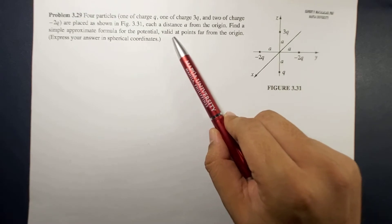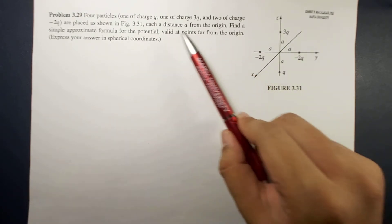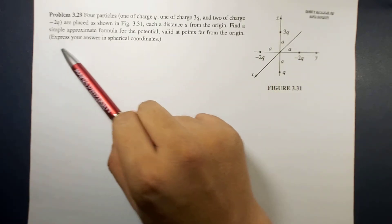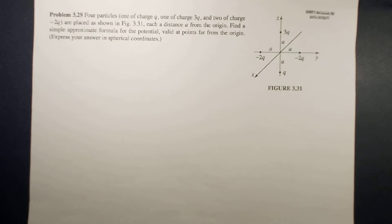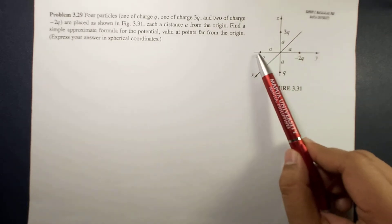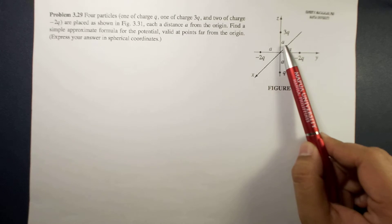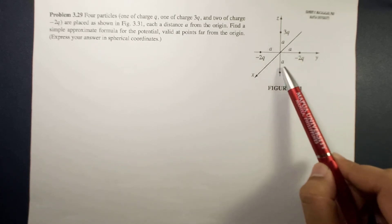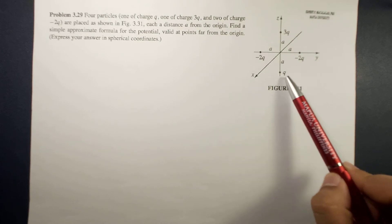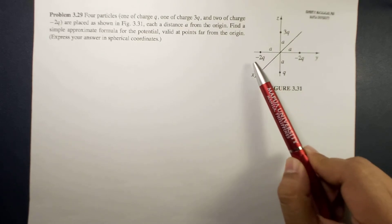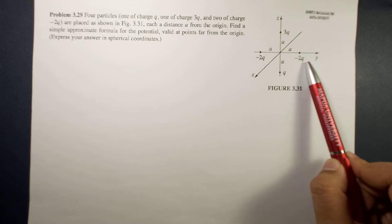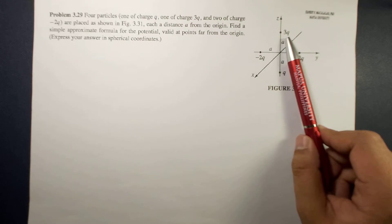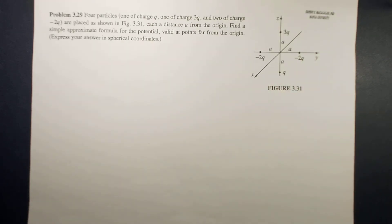Express your answer in spherical coordinates. So we have four charges here, they are all equidistant from the origin, located at these points. One charge is q, two of the charges are negative 2q, and the fourth charge is 3q.